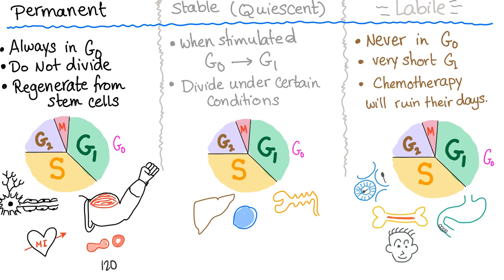In the middle you have stable cells. They stay in G0 for the most part, but under certain conditions they can go from G0 to G1. What do I mean by certain conditions? Like losing half of your liver — that's a special condition. In this case, the liver will start to divide.